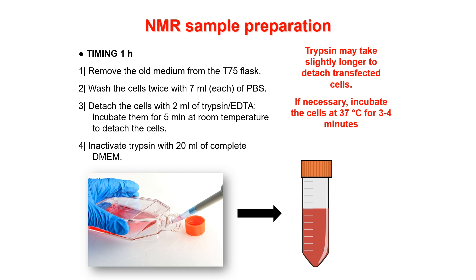This is how we prepare the sample. First we need to detach the cells from the flask, and to do so we trypsinize the cells. This preparation from flask to tube requires about one hour. First you remove the spent medium from the flask, then wash the cells twice with 7 mL of PBS for each wash, then detach the cells by adding 2 mL of trypsin-EDTA. You cover the monolayer of cells with trypsin and incubate for five minutes at room temperature.